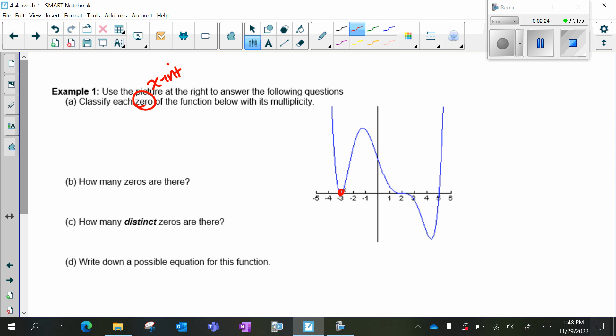So I have one, two, three. x = -3. This is an even and it's a multiplicity of two because it's a bounce.